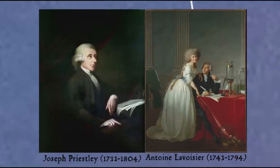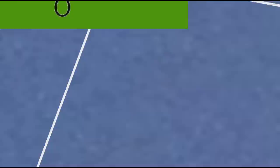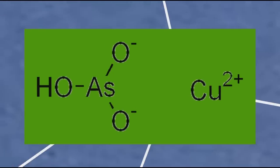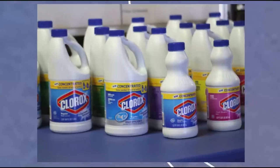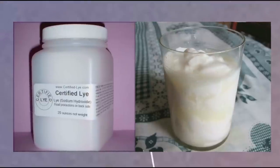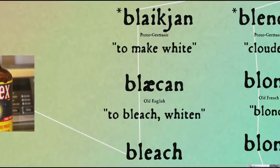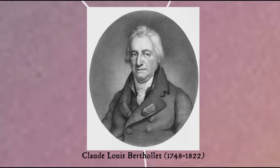Scheele, referred to as 'Hard Luck Scheele' by Isaac Asimov because of all the discoveries he made before others went public with them — thus gaining all the credit — was also the first to isolate oxygen; it was Joseph Priestley and Antoine Lavoisier who beat him to publication. Scheele also invented a bright yellow paint which came to be known as 'Turner's patent yellow', after the man who stole the patent from under him. That's why he was so quick to cash in on Scheele's green in spite of knowing about the arsenic poisoning problem.